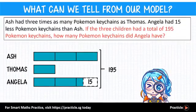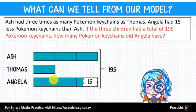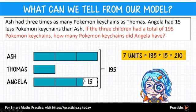How many Pokemon keychains did Angela have? Looking at the model, if we were to add the dotted portion into the total of 195, we can see that it gives us the value of 7 units. Well, that's a surprise — and a very useful one indeed. We now know that we can find the value of 7 units by adding 15 to 195, and this gives us a value of 210.